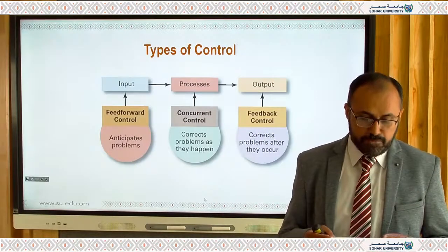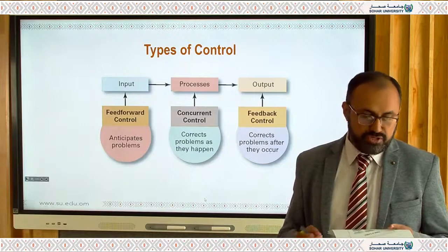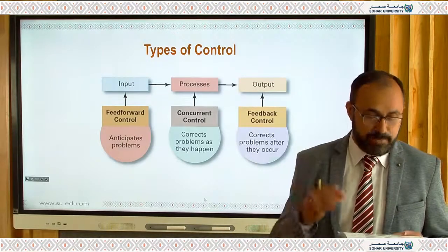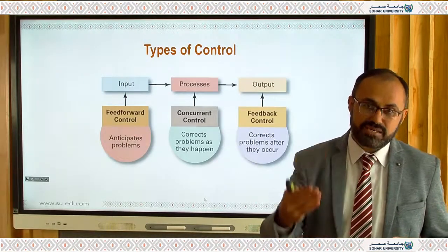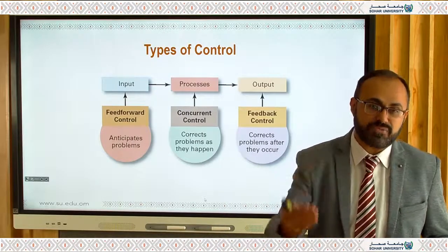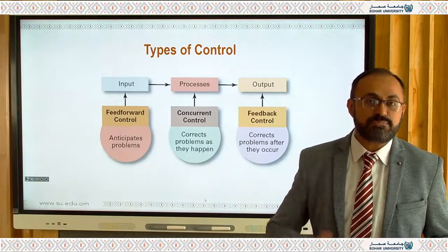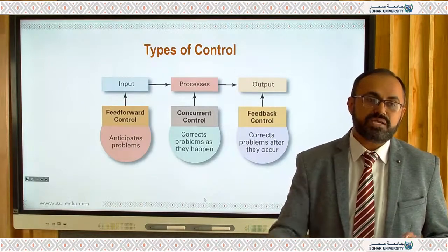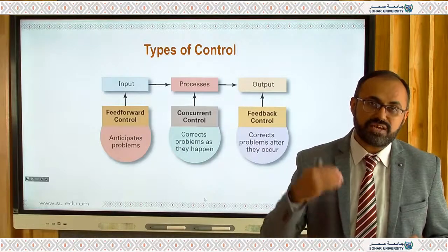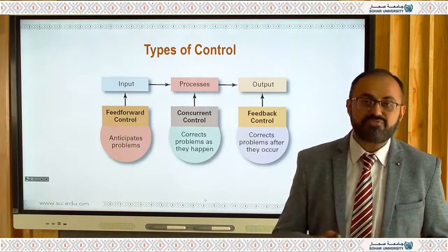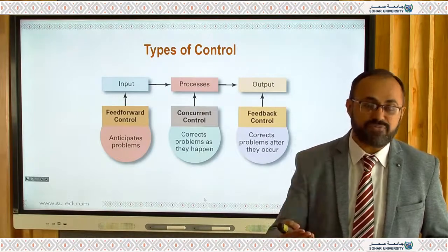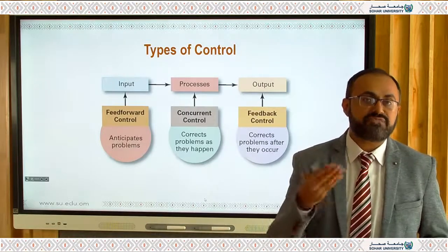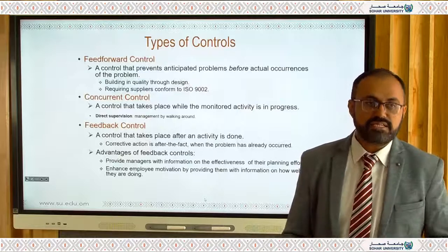There are three types of controls based on timing: input, process, and output. For input, you apply feed-forward or proactive approaches — planning thoroughly before anything happens. Process control occurs during execution — for example, while developing an app you continuously receive customer feedback and improve modules in real time. Output control happens after performance is delivered — for example, reviewing monthly sales results and revising strategies for the next period.